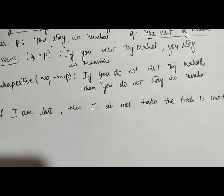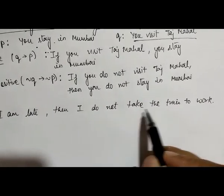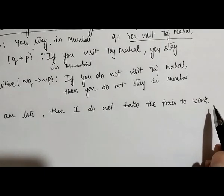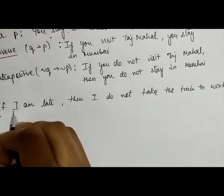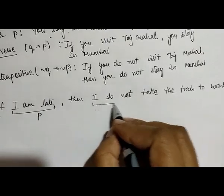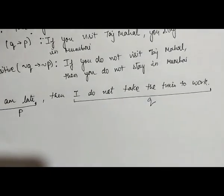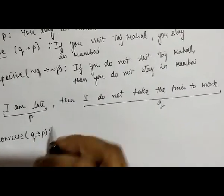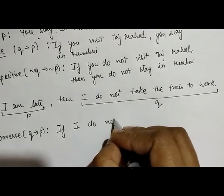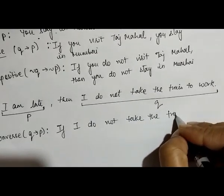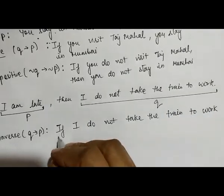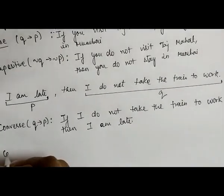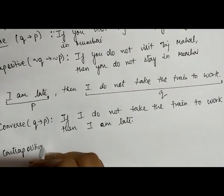Now we take another example: 'if I am late then I do not take the train to work'. For this conditional statement we also have to find the converse, inverse, and contrapositive. Suppose p is 'I am late' and q is 'I do not take the train to work'. The converse is 'if q then p': 'if I do not take the train to work then I am late'.